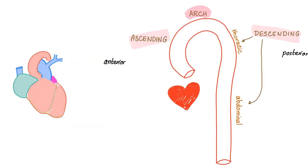Before we start talking about aortic dissection, let's talk about the aorta. This is your beautiful heart. Out of the left ventricle emerges the aorta, and then it arches, and then it descends. We call this part the ascending aorta, the arch, and then the descending aorta.